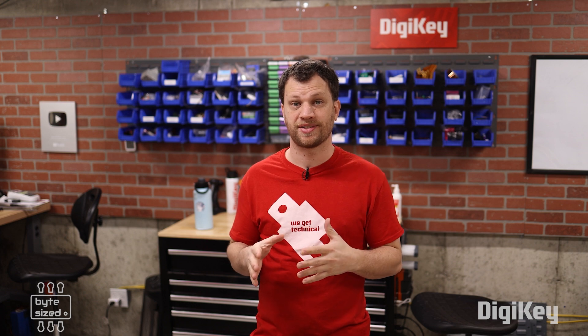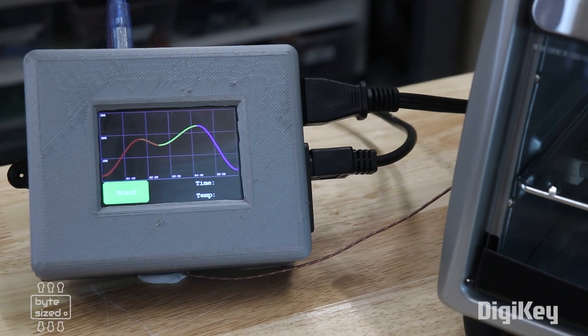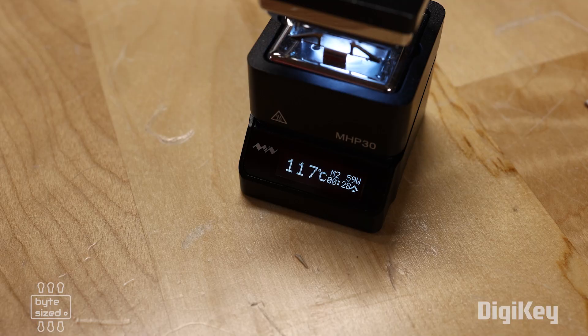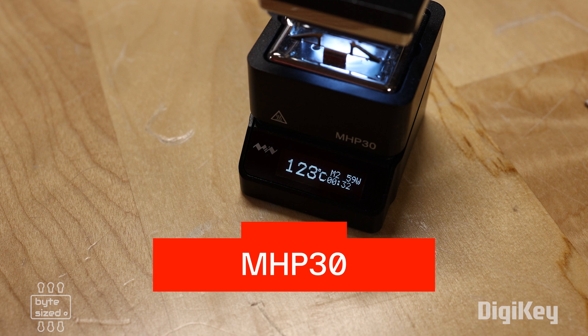Now that all the parts are placed, it's time to reflow the board. Last year, I built a solder reflow oven using a toaster oven, but this time I wanted to try a different tool. I picked up the MHP30 from DigiKey.